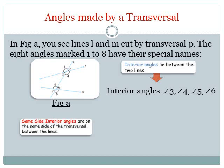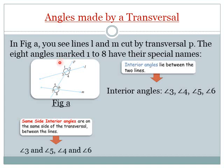Next are same side interior angles. Same side interior angles are on the same side of the transversal and between the lines. The transversal has two sides — left side and right side. Same side interior angles lie on either the left side or right side between the two lines. Two pairs are formed: angle 3 and angle 5 are same side interior angles, and the second pair is angle 4 and angle 6.